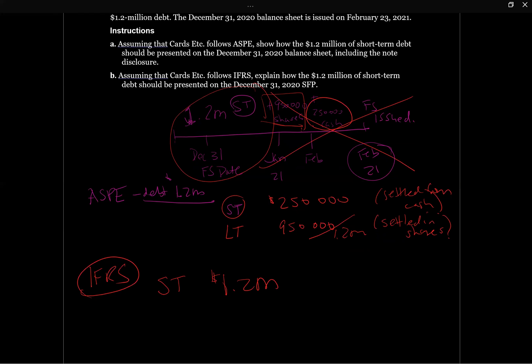Companies want to show certain ratios — such as the current ratio — at certain levels to comply with bank covenants, so sometimes companies are biased to want to show debt as long-term. They work hard to refinance short-term debt into a long-term obligation. IFRS says that's great that you did those things after the fact, but as of the statement of financial position date, this is what was short-term — therefore, that's what we're going to record in the financial statements.